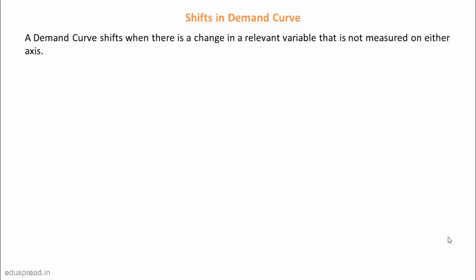In this lecture we will talk about shifts in demand curve. In my last lecture I told you that movements along a demand curve happen when there is a change in a variable that is measured on either of the two axes. A demand curve shifts when there is a change in variables that affect the quantity demanded but are not measured on either axis.